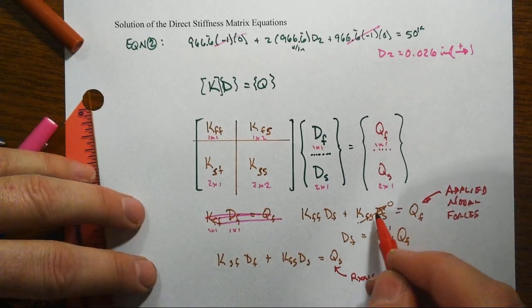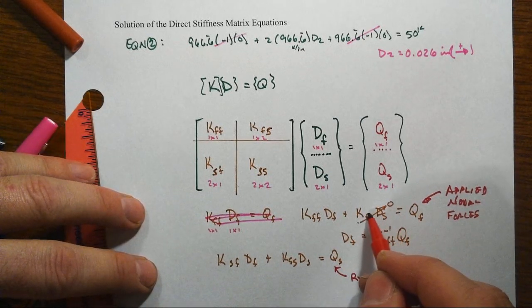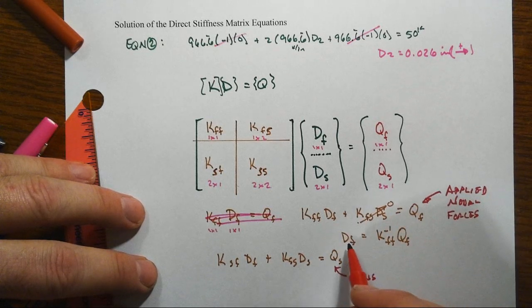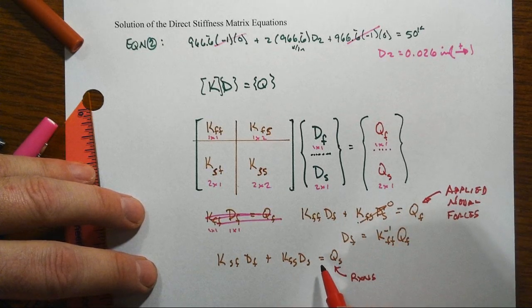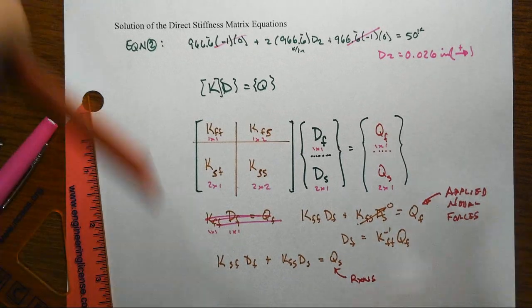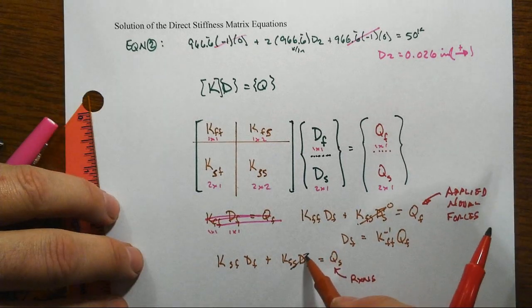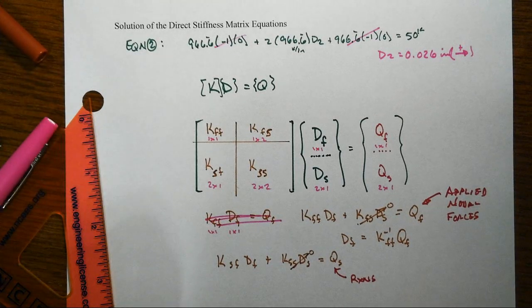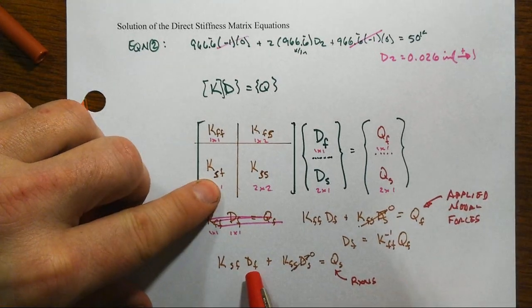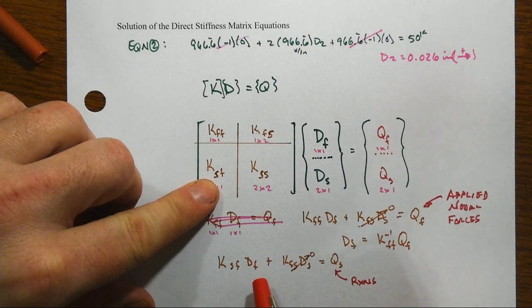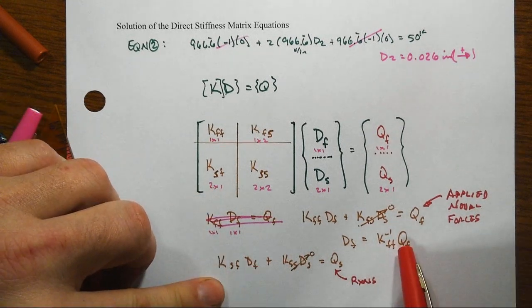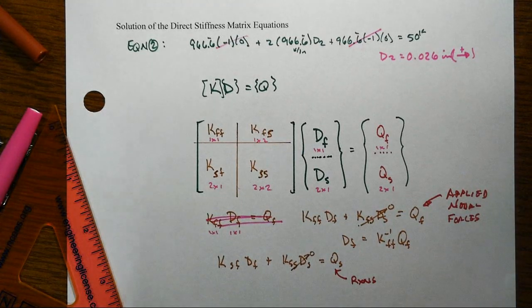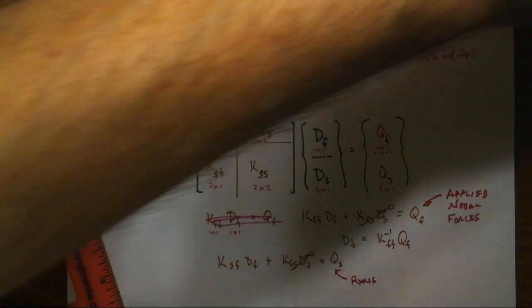Since we know what Ds are—they're generally going to be zero, not always, but generally zero—but if they were non-zero, then they'd be a known quantity here. In this special situation, the reactions are simply going to be KSF times Df. Since we just found out what Df is, you can actually substitute this directly in. There's your matrix manipulation for all of these various quantities.